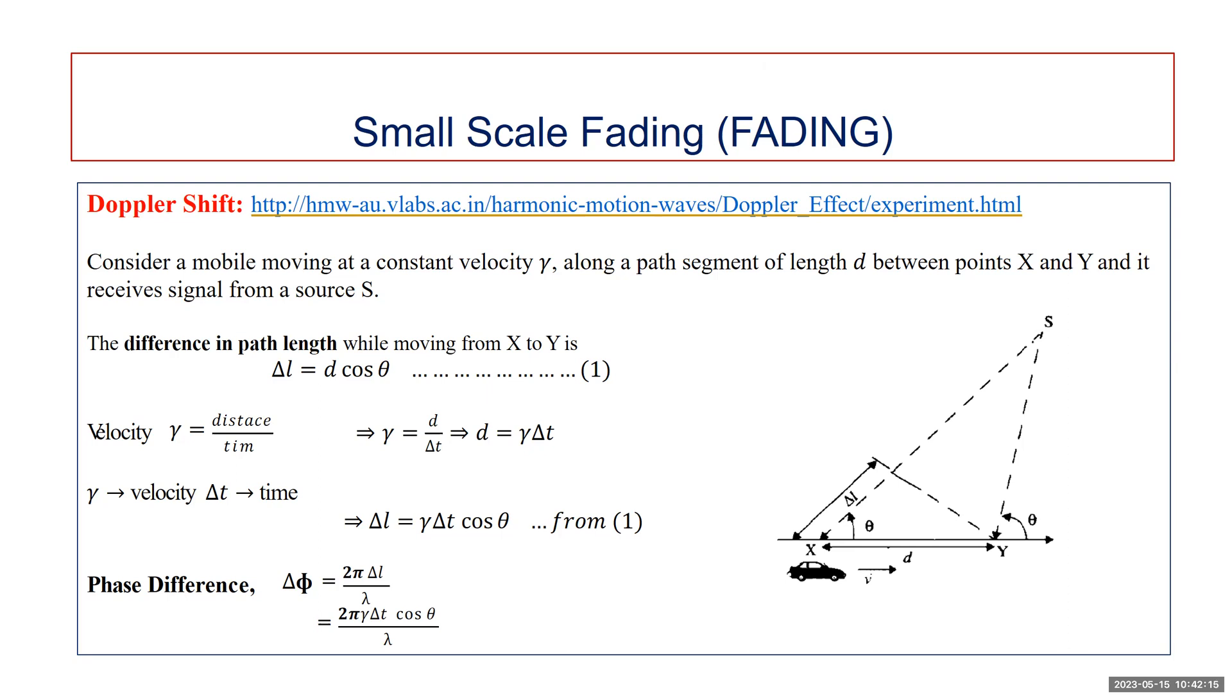We assume that D is very small and the distance S is very remote or very far. Then only we can derive the formula for Doppler shift. These are the two assumptions to consider: D small and S very remote or far distance. The difference in path length traveled by the wave from source S to the mobile is given by ΔL = D cos θ. That is the path difference. Applying the Pythagoras theorem, we get ΔL = D cos θ.